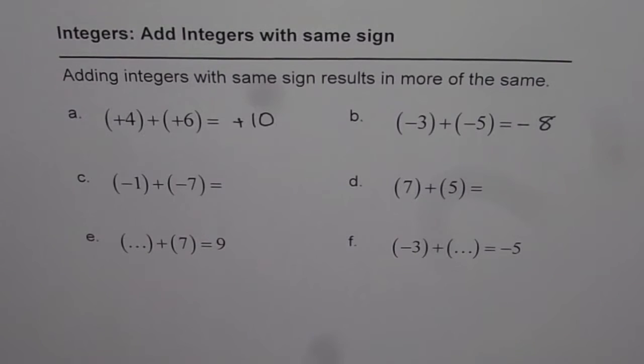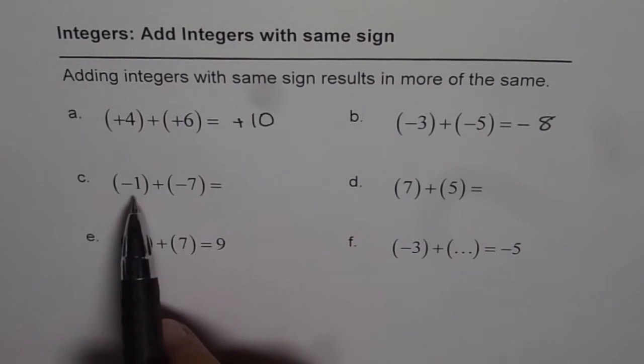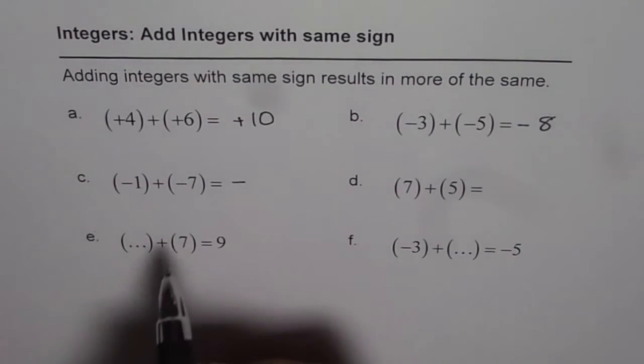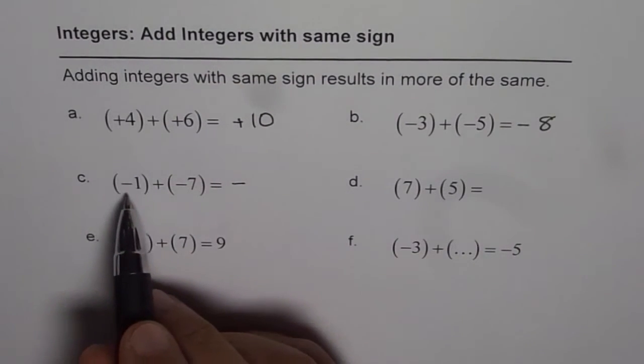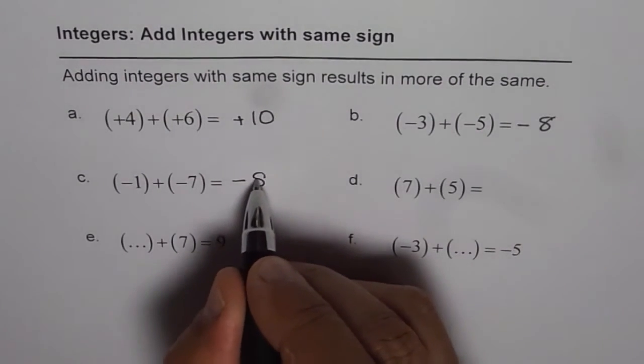So that is how you add integers with the same sign. Let us continue. Minus 1 plus minus 7. You are adding two negative integers. So you should get negative as your answer and more of the same means minus 1 minus 7. When you add, it should be minus 8.